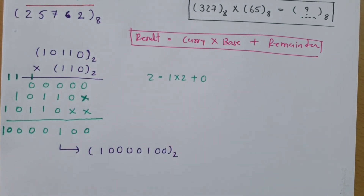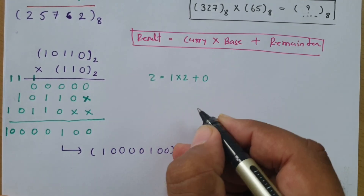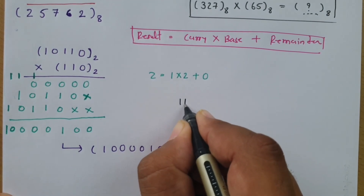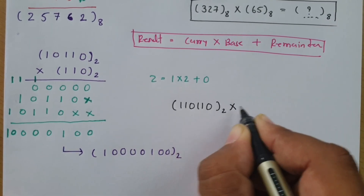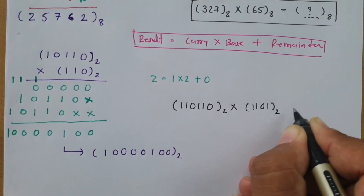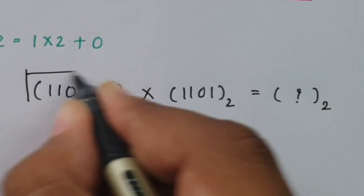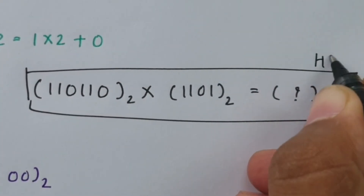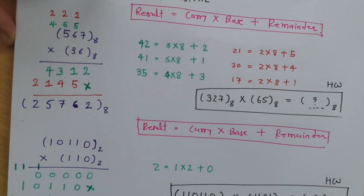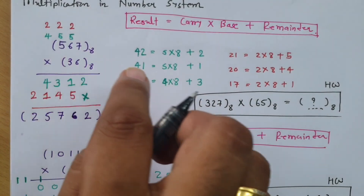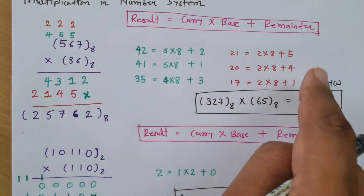Now I will give you one problem for self-calculation — write down your answer in the comments and I will see how well you have understood what I have taught here. The problem is: 110110 multiplied by 1101 in binary. Usually binary multiplication is the easier one, but when you have multiplication in other number systems such as hexadecimal, you should use the carry-remainder method as demonstrated.